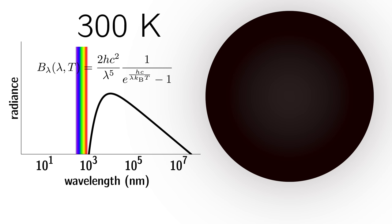At room temperature, approximately 300 Kelvin, the radiation is mostly infrared, so not visible to the human eye.